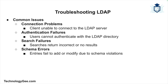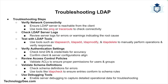Despite its robustness, LDAP can sometimes encounter issues that require troubleshooting. Common problems include connection problems where the client cannot connect to the LDAP server, authentication failures where users are unable to authenticate, search failures where searches return incorrect or no results, and schema errors where entries fail to add or modify due to schema violations. The first troubleshooting step is to verify network connectivity — ensure that the LDAP server is reachable from the client using tools like ping or traceroute.